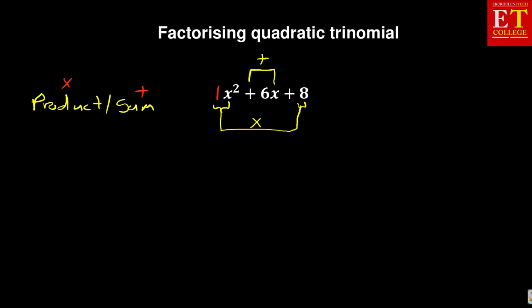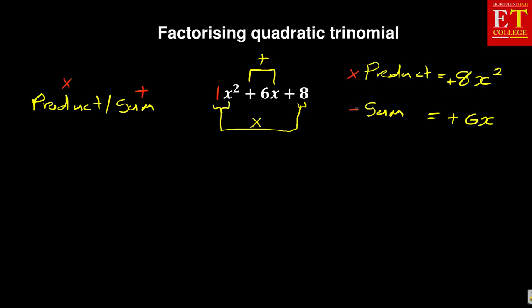So when we say product sum method, the product is one x squared times eight, which is eight x squared — and the sign is positive. The sum, which is the center number, is positive six x. So product means multiplication and sum means plus. What you need now is two numbers — we call them the factors. When you multiply them, you must get positive eight x squared. When you add them, you must get positive six x.